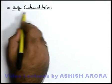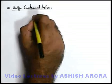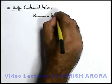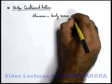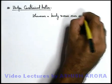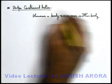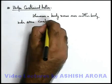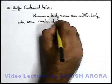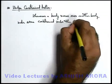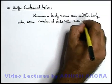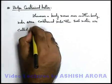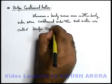Now we'll study about wedge constraint motions. For wedge constraints, we can say: when a body moves over another body under some constrained rules, then such motions are called wedge constrained motions.